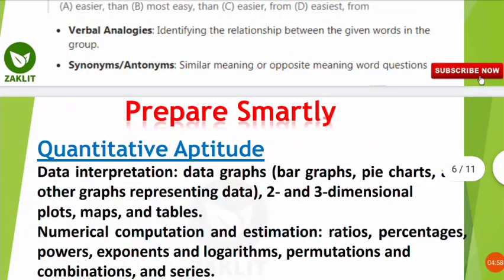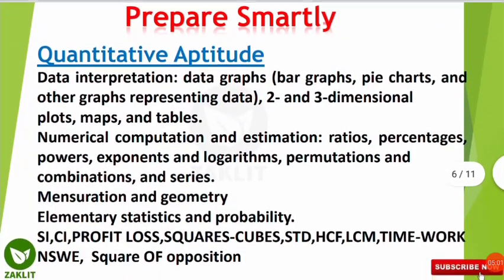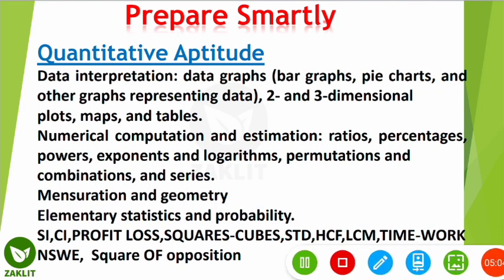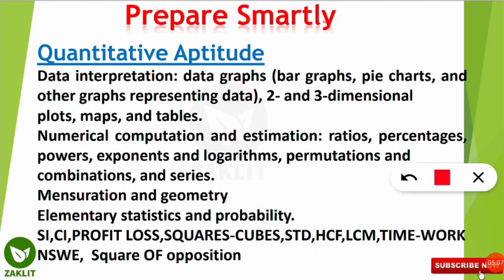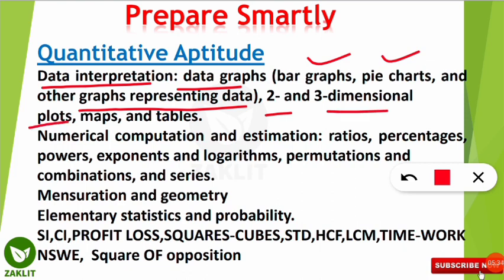The second part under general aptitude is quantitative aptitude. This section is very interesting and easy, though many fear maths. The syllabus consists of data interpretation — where data is given as bar graphs, pie charts, or other graphical forms — two and three-dimensional plots and figures, maps, and tables from which questions are asked.